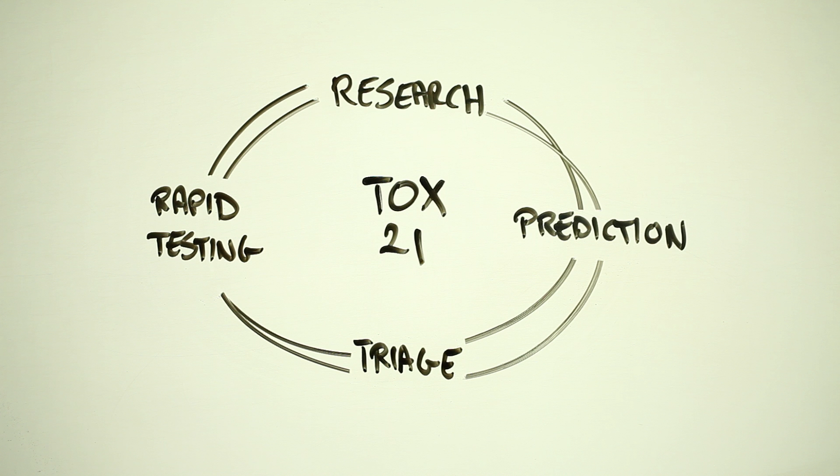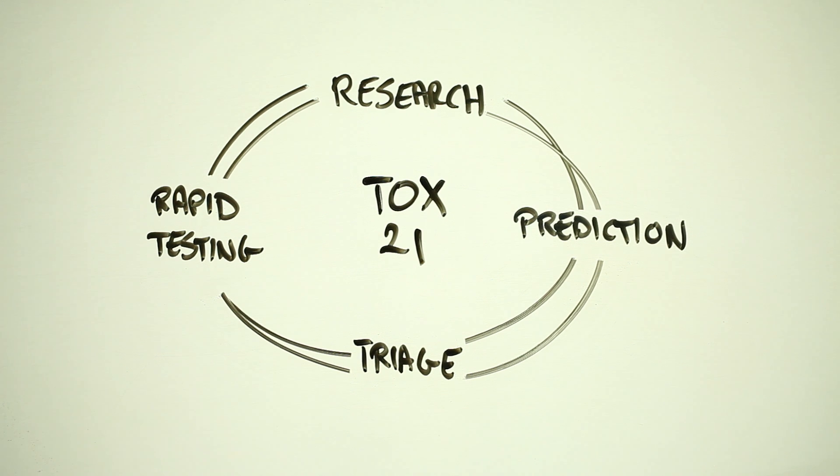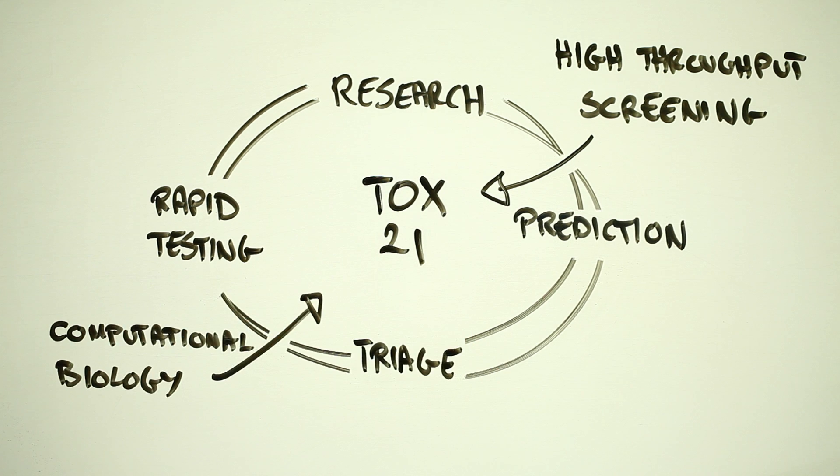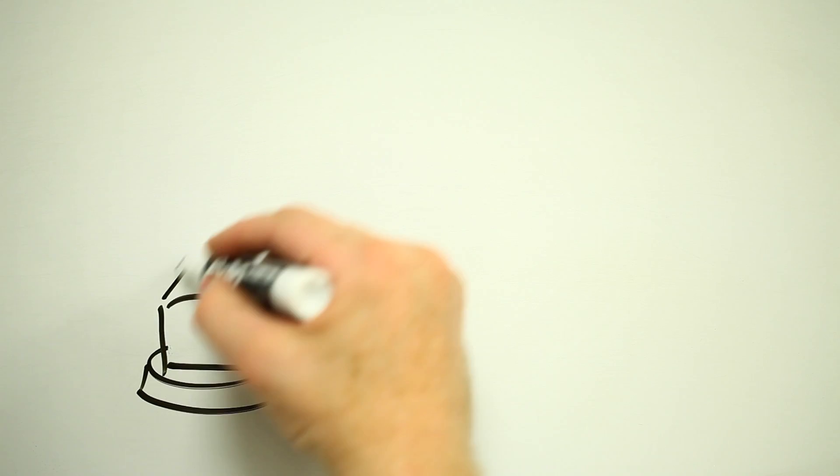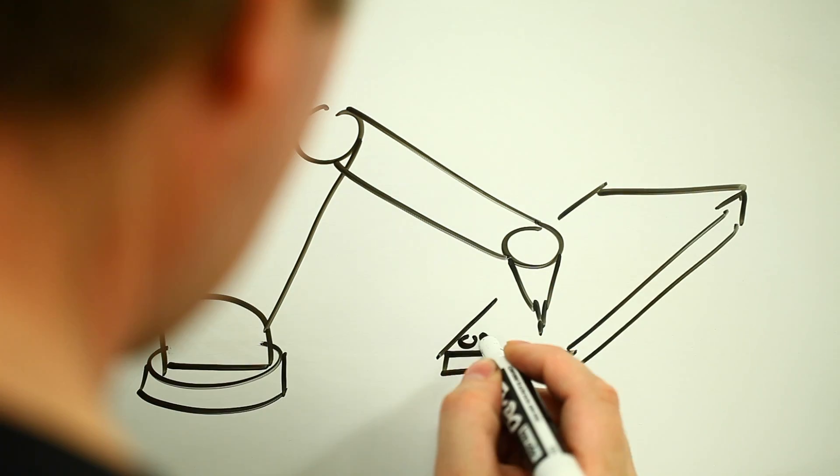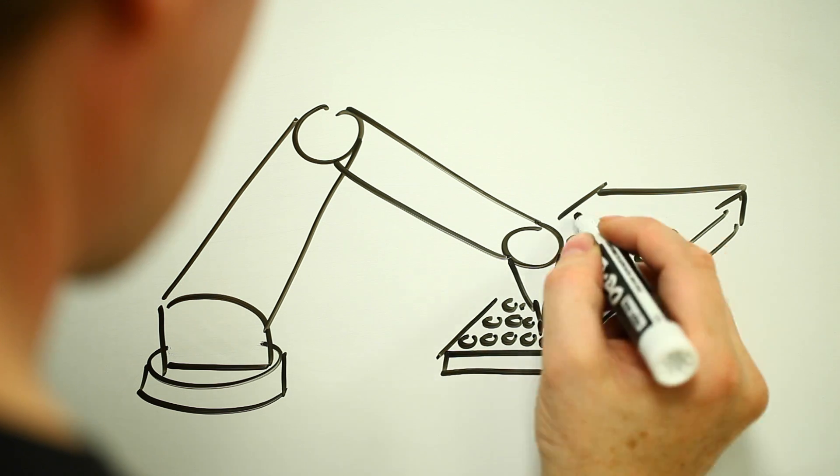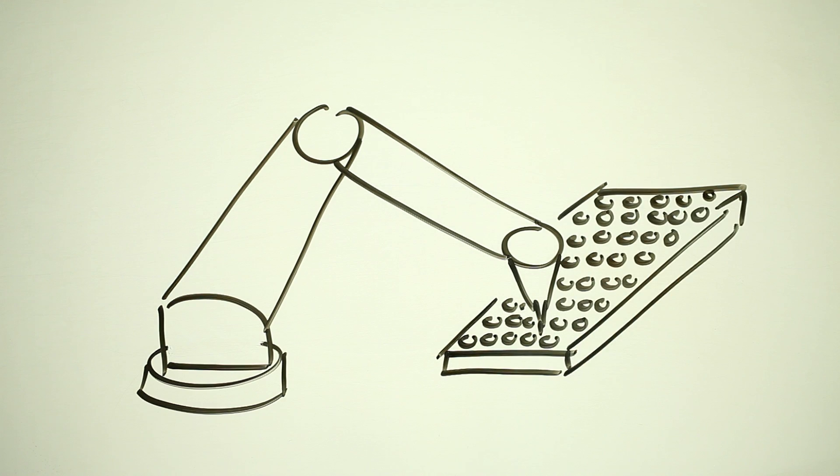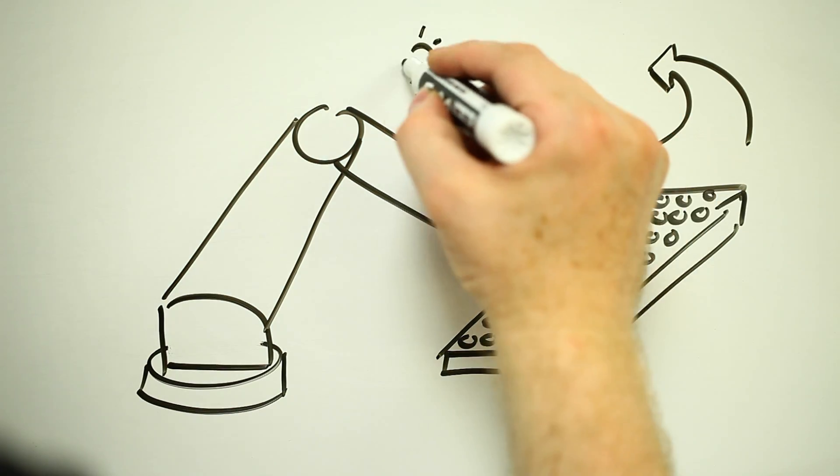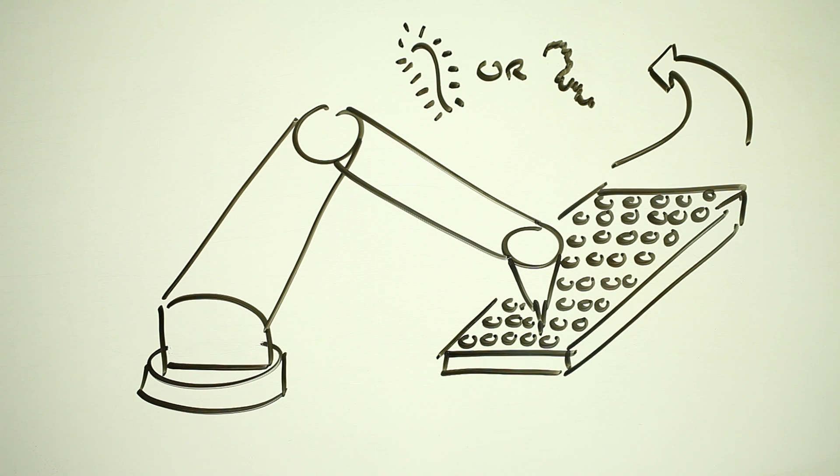At the heart of Tox-21 are two really cool emerging technologies: high-throughput screening and computational biology. High-throughput screening runs chemicals through tests really fast. In fact, robots are used to automatically place these substances in tiny test wells and observe what happens next. These tests are designed to indicate how increasing amounts of chemicals interfere with different toxicity pathways.